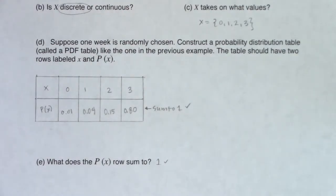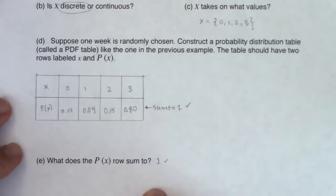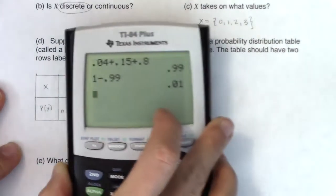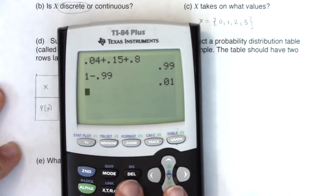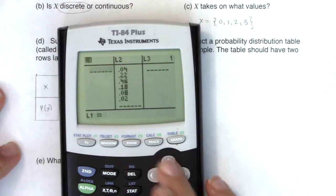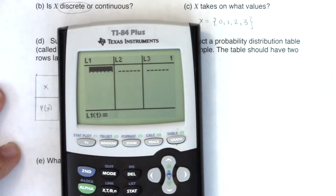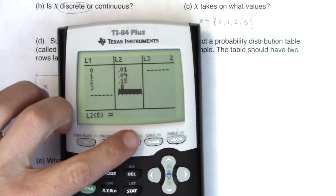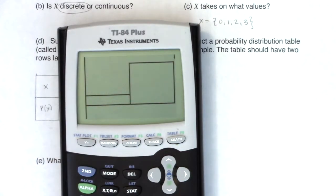Now before we leave this problem behind, I just want to show you what the PDF histogram would look like. I know we've been doing the table here, and that's great, because we're going to make a table most of the time, but I do want you to see what the PDF histogram would look like. So let me go back into my list and clear out what I have, and put in the values of our variable into L1, and I'm going to put in those probabilities, or those relative frequencies, into L2. I'm going to start with zoom 9, and I have a feeling I'm going to have to alter it.